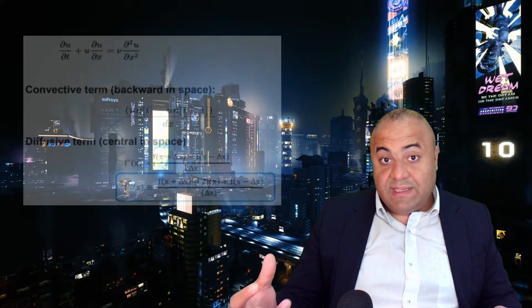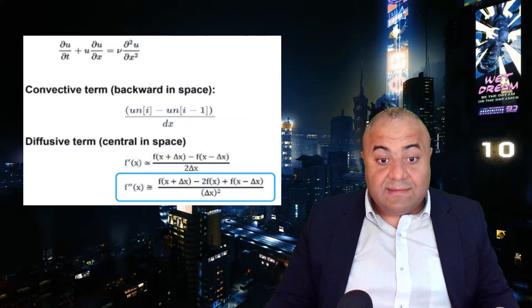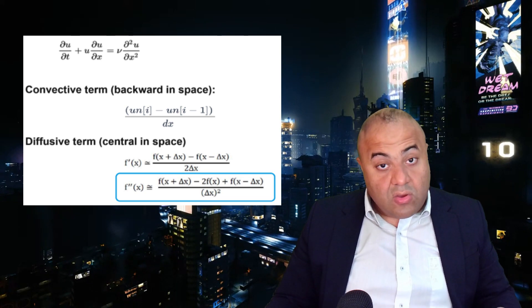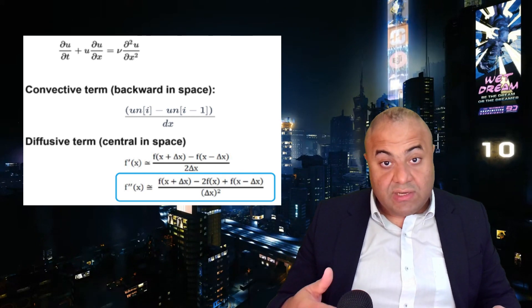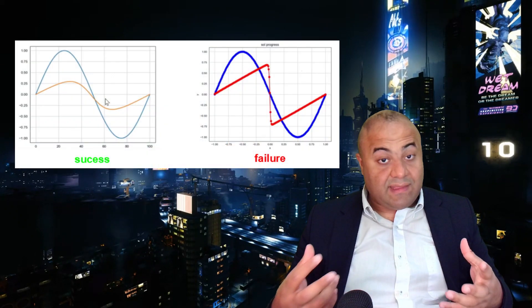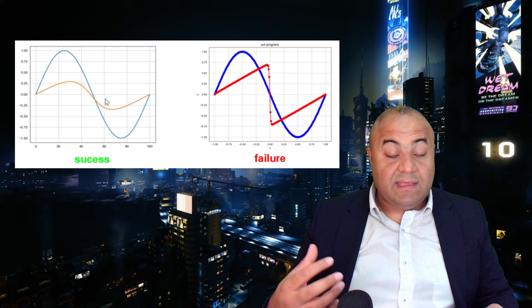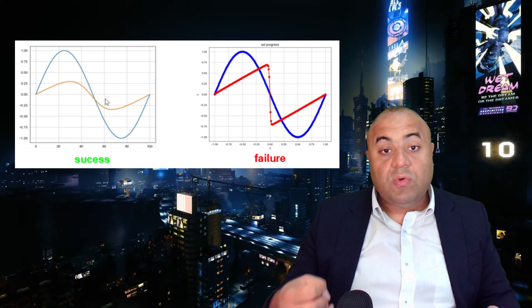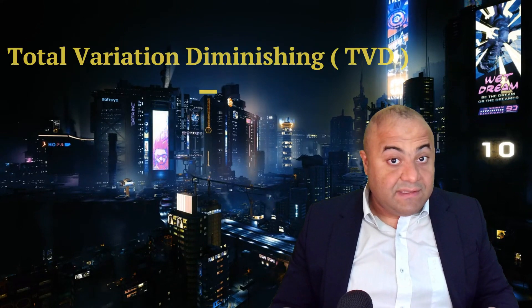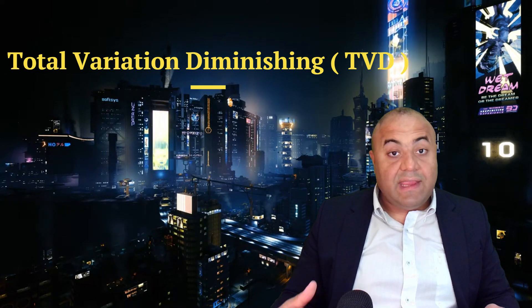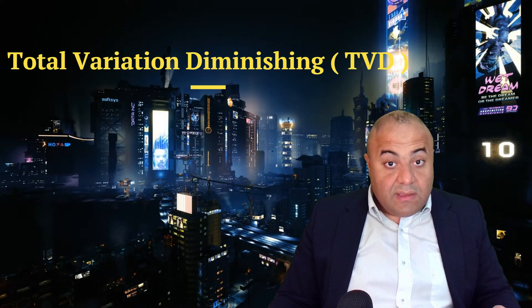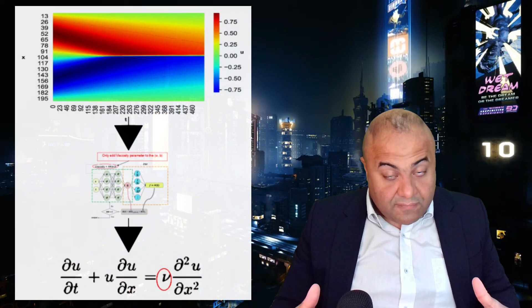We will solve the Burgers equation using a finite difference method with a central difference scheme. We will find that this scheme may fail up to a certain time domain due to a discontinuity that occurs. We will then use the TVD scheme to solve it and build the data needed for training the inverse PINNs problem.